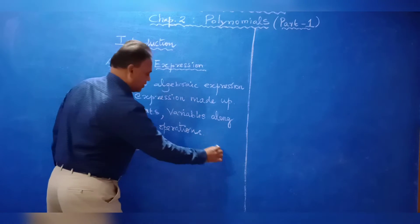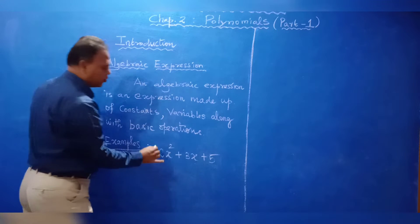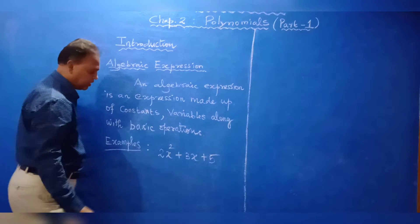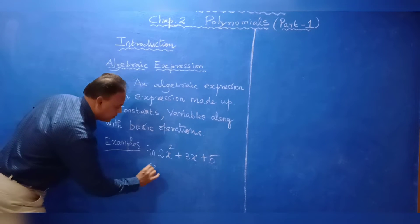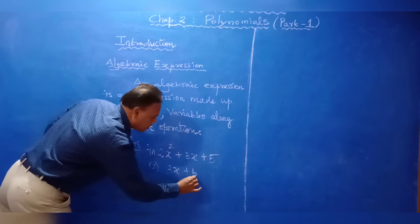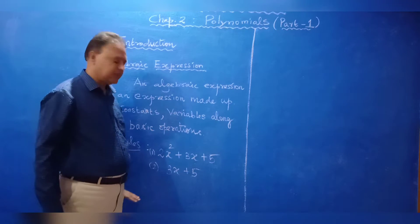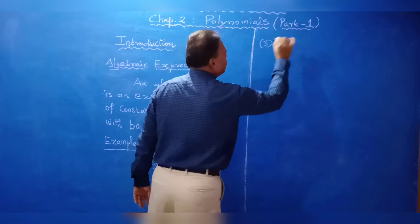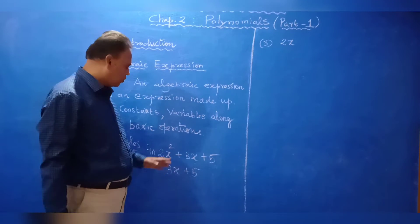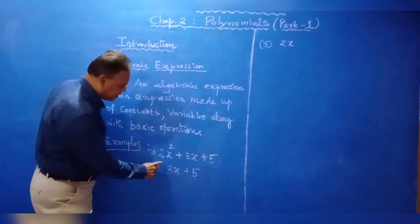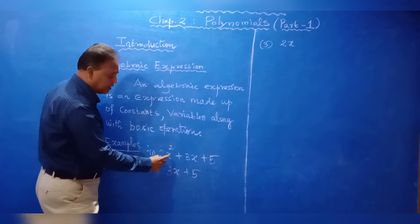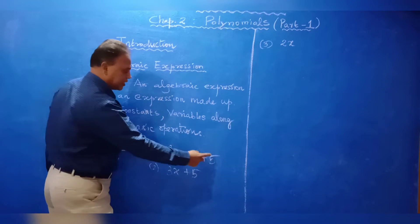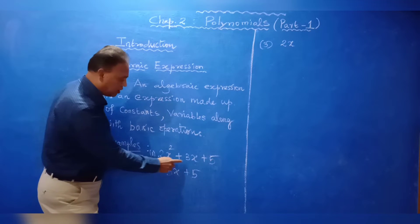Together it is called an expression. Any expression has constants, variables, and operations. For example, 3X plus 5 is also an expression, and even 2X is also an expression. In each expression you have terms. In the expression 2X squared plus 3X plus 5, there are 3 terms.